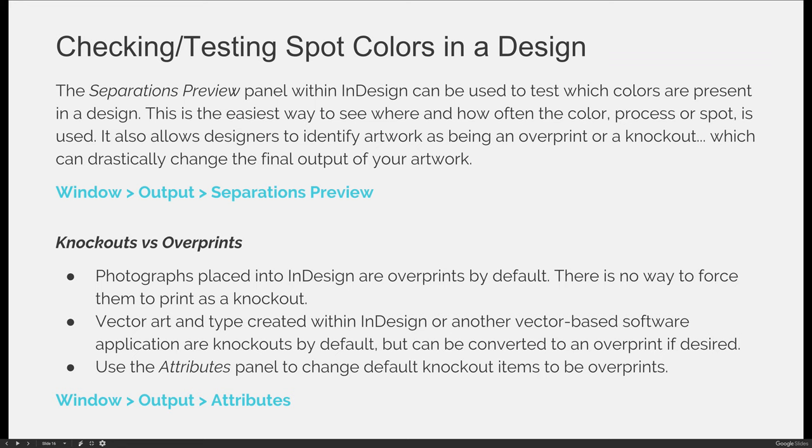To open the separations preview panel, you'll go to the Window menu and choose Output, then Separations Preview. When you are creating artwork, you're going to choose colors — you might say, I want it to be blue. Do I want it to be CMYK blue or do I want to print spot blue? You also have the ability to determine if it is a knockout or an overprint.